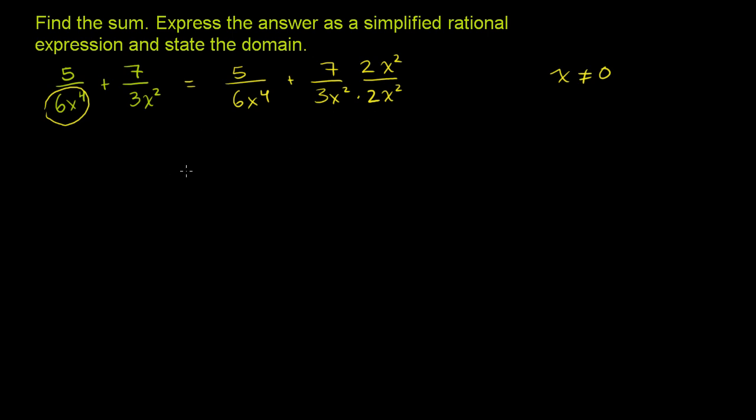And then that will give us the expression 5 over 6x to the 4th plus, this becomes 7 times 2 is 14, 14x squared over 3 times 2 is 6, x squared times x squared is x to the 4th. So now we have a common denominator, 6x to the 4th.